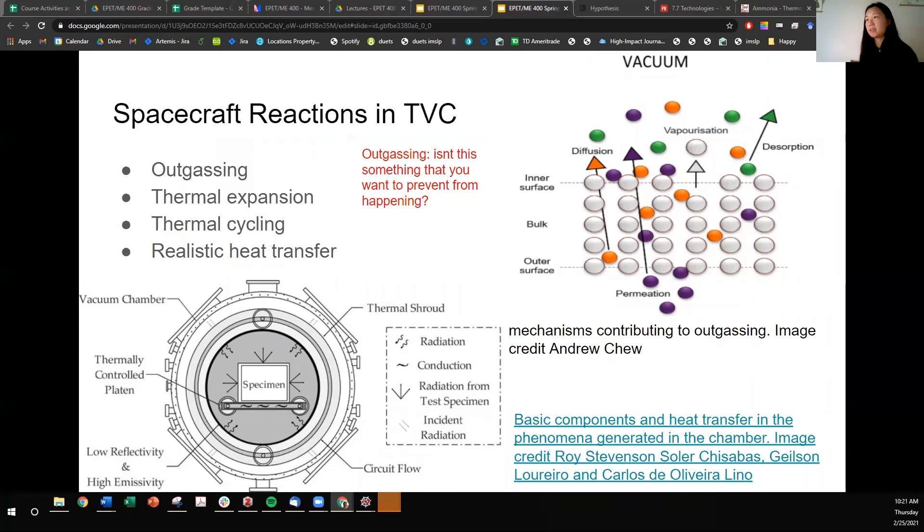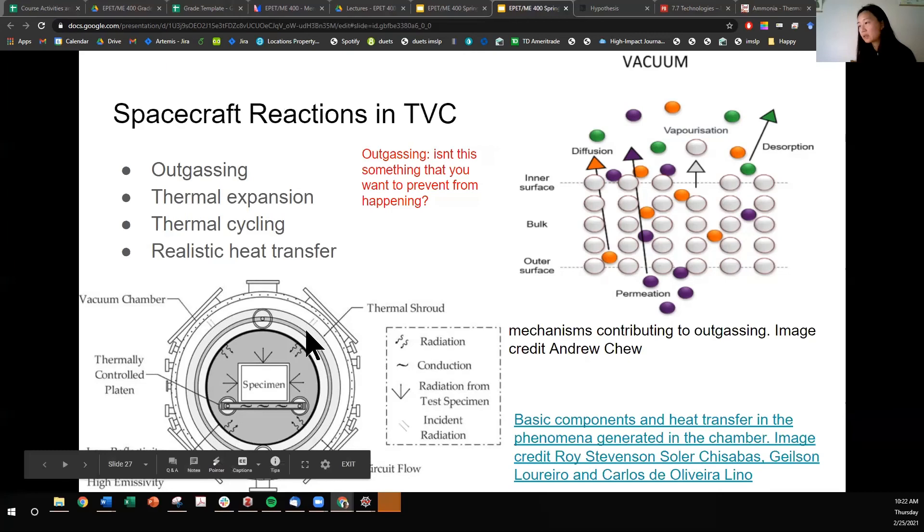Okay, so once the spacecraft is within the thermal vacuum chamber and it's pumped down and it's being subjected to different thermal profiles, the spacecraft will undergo outgassing, thermal expansion, thermal cycling, and realistic heat transfer. So here you'll see just a cross-sectional area of how the spacecraft would be mounted inside of a thermal vacuum chamber. We've got the spacecraft and these little squiggly lines are radiation that is being imparted to the spacecraft but also could be emitted outward. And that's from this low reflectivity and high emissivity shroud. We also have something called a thermally controlled platen plate. That can be the cold or the hot plate that this like one face of the spacecraft interacts with.